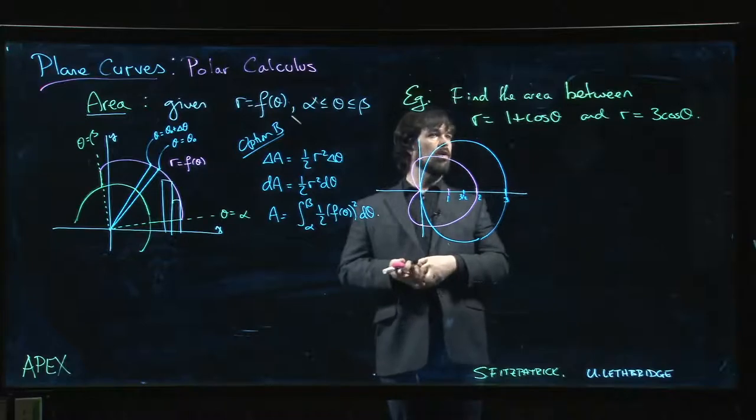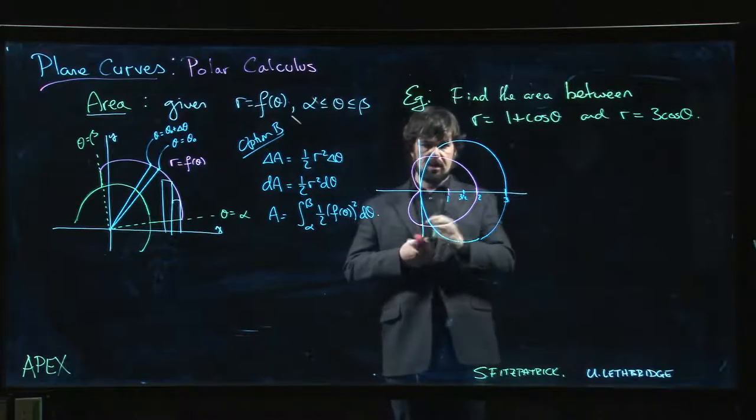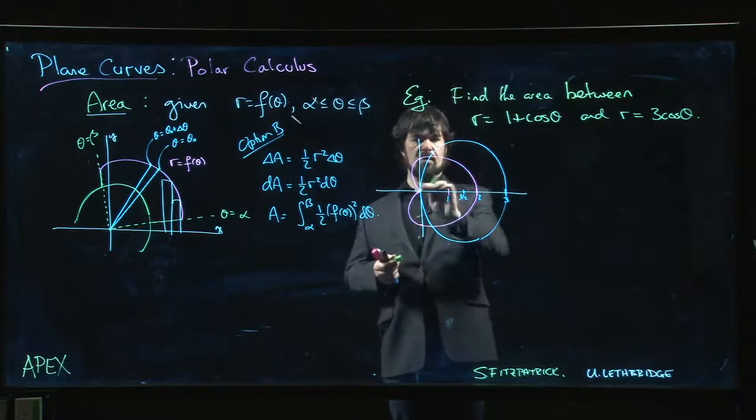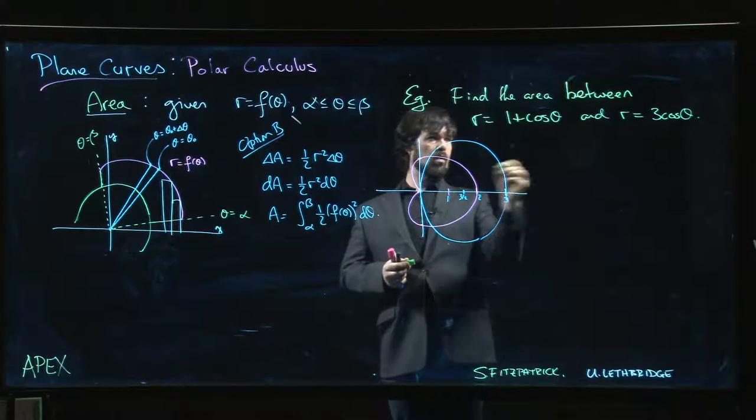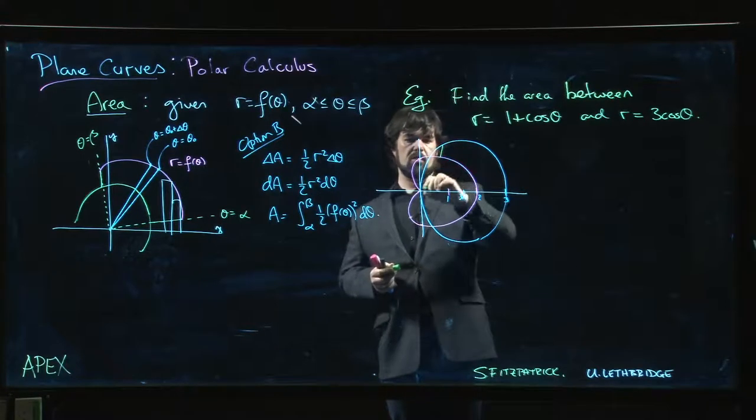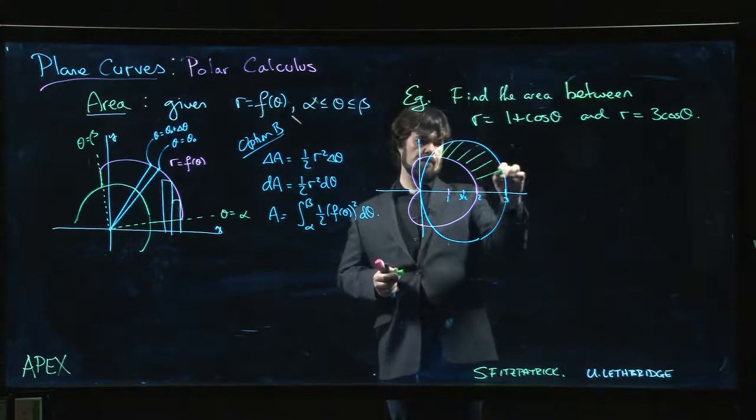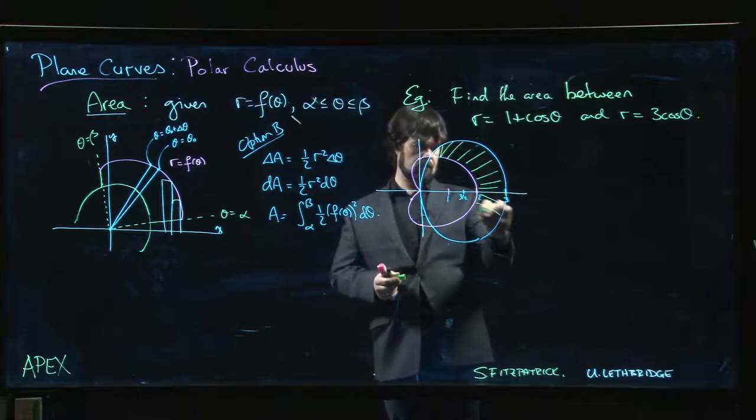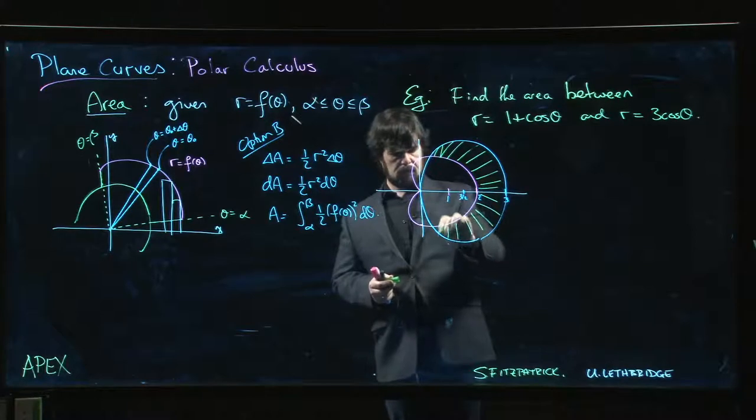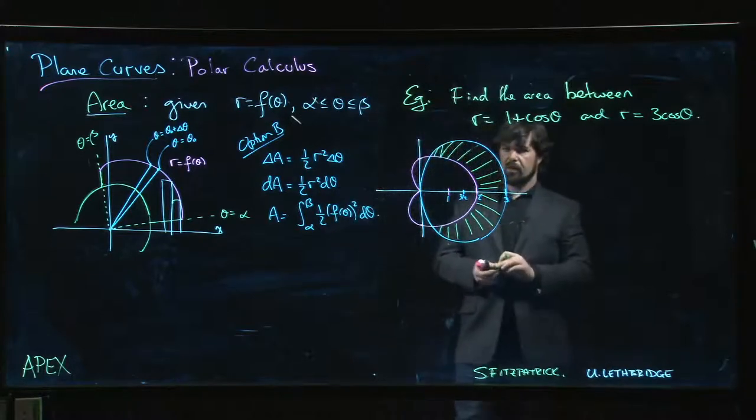So the area that we're looking for, the area between, is going to be the area that's outside the cardioid but inside the circle. So we're looking for this area here. That's the area that we want to find.